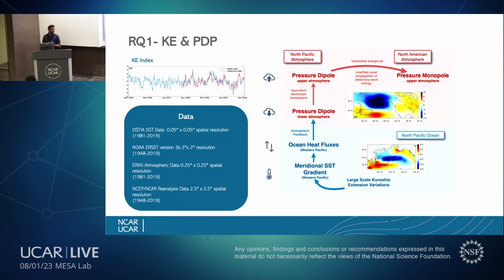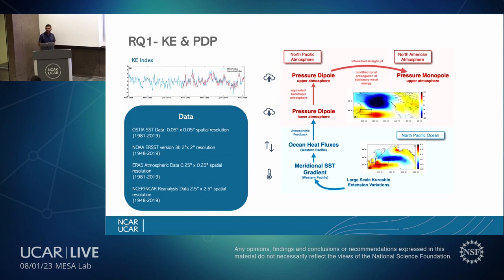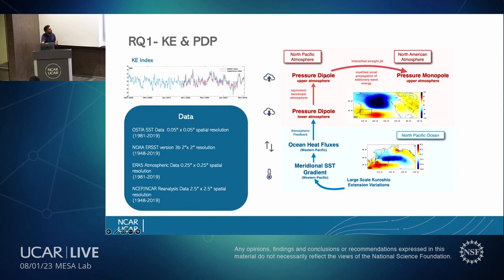To answer the first question — what scale of Kuroshio Extension variability influences PDP — we used reanalysis data from OSTIA, NOAA IRSSD, ERA5 for atmospheric data, and incipient calorie analysis data. We found that the non-dominant mode, or the second mode of large-scale Kuroshio Extension variability, sets up a meridional SST gradient. This meridional gradient supports ocean heat fluxes, supporting a north-south dipole-like pattern similar to PDP. Modifications to the jet and solar propagation of stationary wave energy then support a downstream pressure monopole, which supports the east-west phase of PDP.